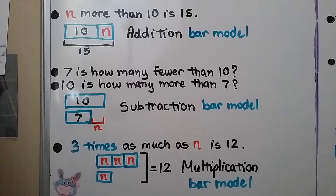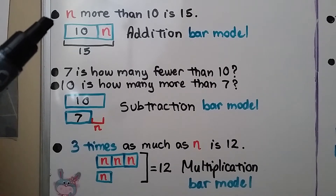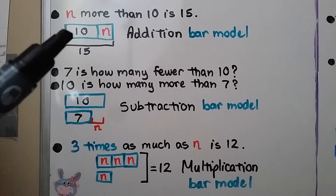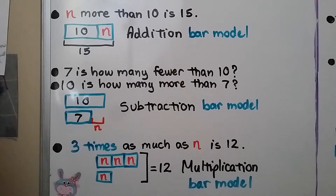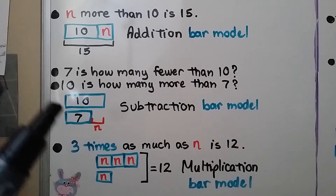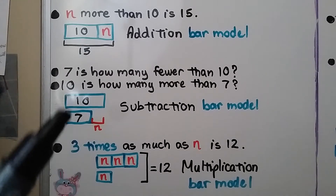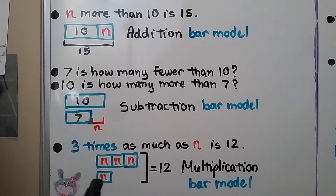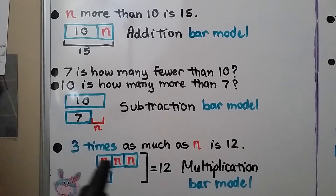If we see 'n more than 10 is 15,' that's an addition bar model — the whole thing is 15, we have 10 and we need to find n. If we see '7 is how many fewer than 10' or '10 is how many more than 7,' that's a subtraction bar model — we have two boxes and we're looking for the difference n. If we see 'three times as much as n is 12,' the top bar has three boxes and they all equal 12 — that's a multiplication bar model.